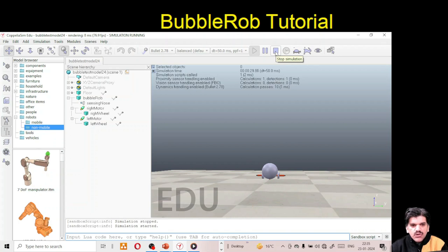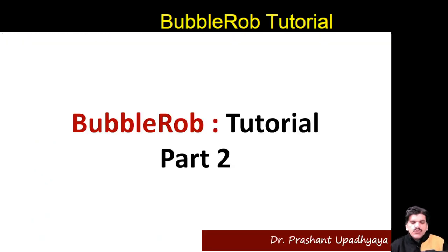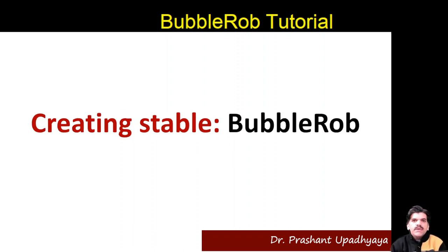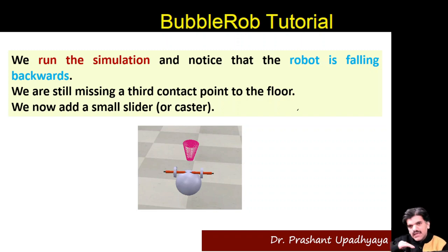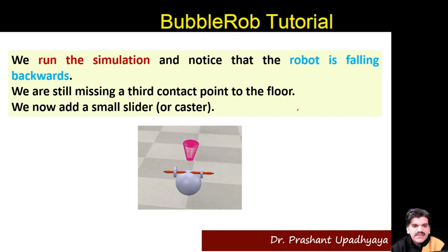In Part One, when we played the simulation we saw that the bubble robot body was falling down — it was shifting backward. So in Part Two we will do the additional steps required to make this bubble robot stable. We still require a point of contact on the floor, so we need to add a small slider, also known as a caster, at the back side of the bubble robot body.